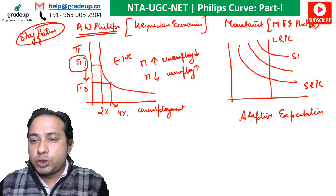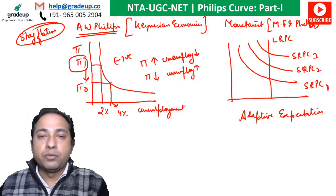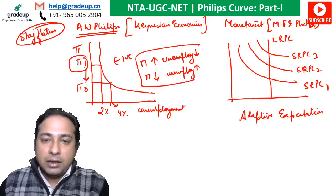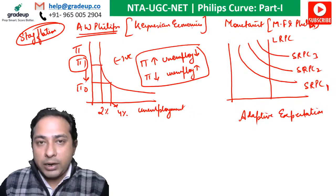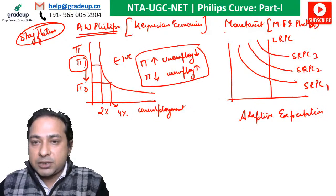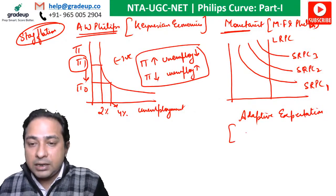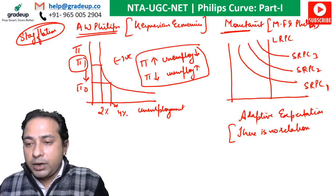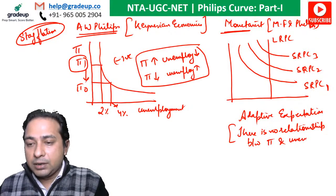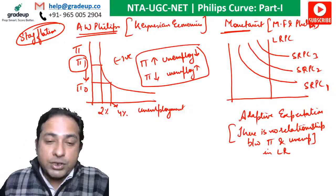So we have multiple short-run Phillips curves. In the short run, the inverse relationship between inflation and unemployment holds. But in the long run, based on adaptive expectations, the monetarists argued there is no relationship at all between inflation and unemployment in the long run.